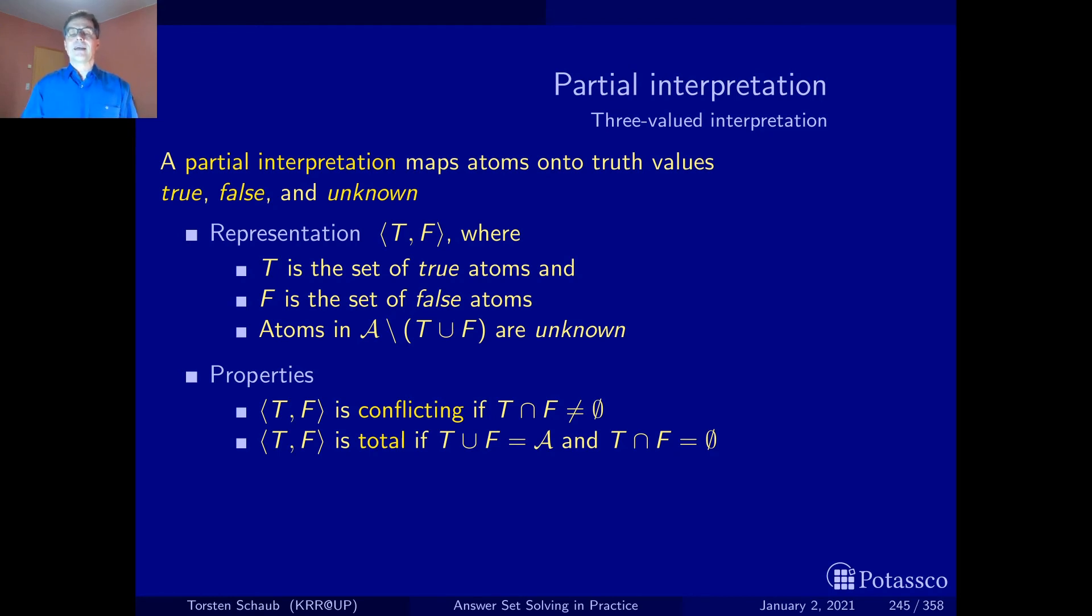We want to describe the computational process where we successively assign more and more truth values, true and false, to the variables. Hence, we also want to talk about when one partial interpretation or assignment is obtained from another one or has less or more truth values.